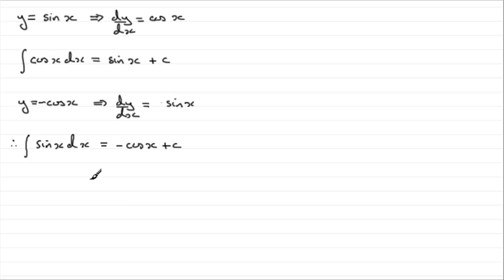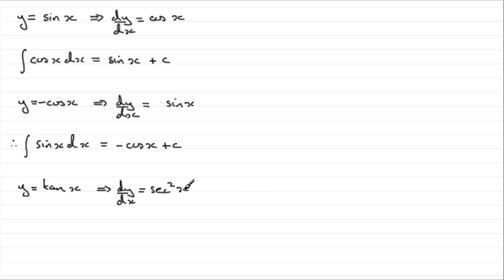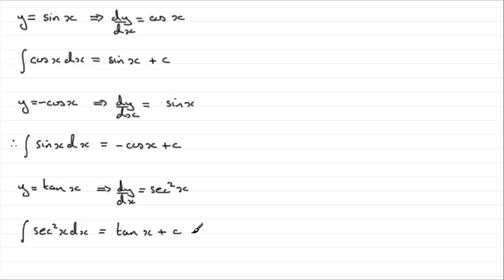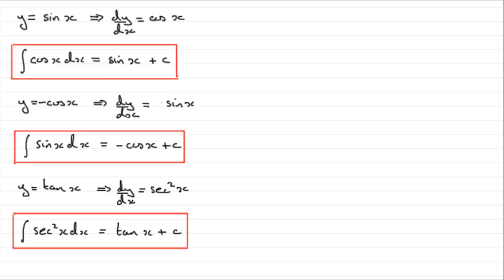Now we're not going to look at the integral of tan x, but we are going to differentiate tan x. Can you remember what the differential of tan x is with respect to x? Well, dy by dx came out to be sec squared x, the same as 1 over cos squared x. So that means that if we had to integrate sec squared x with respect to x, then clearly it's going to be tan x plus that constant of integration.